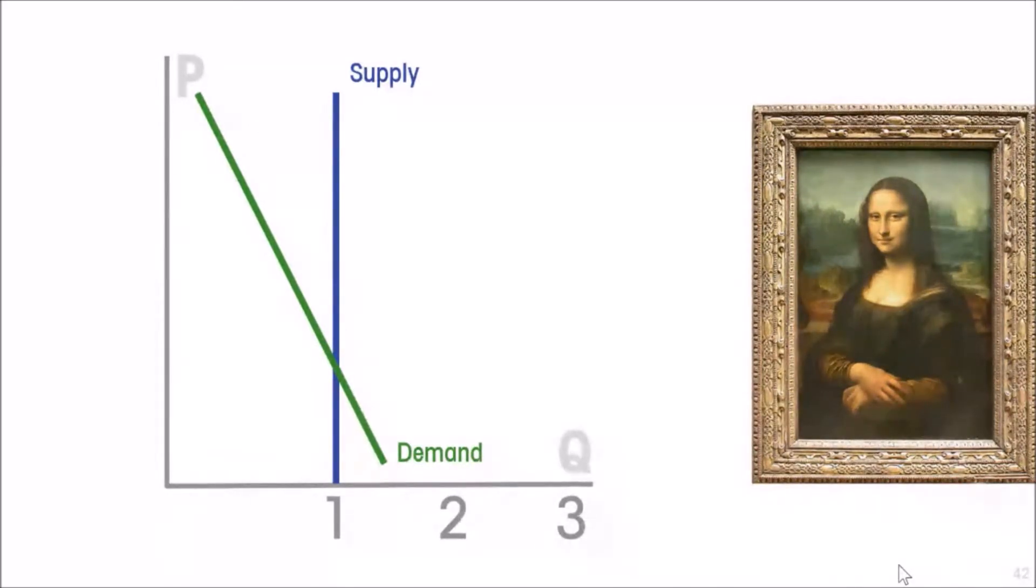Da Vinci, having passed away some time ago, is unable to increase the supply. There is only one and there will always be only one. A higher price shall not call for greater supply, so the price is determined by whatever number of buyers are fighting over this one copy of the Mona Lisa.